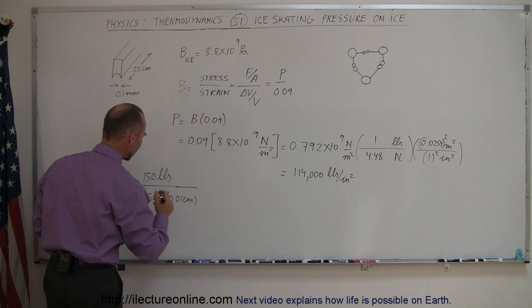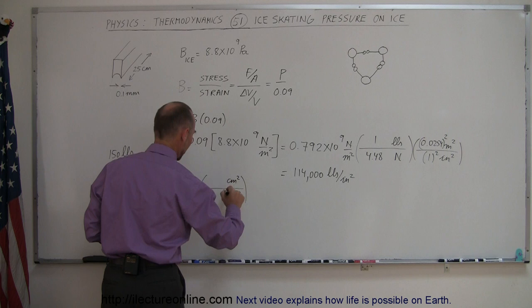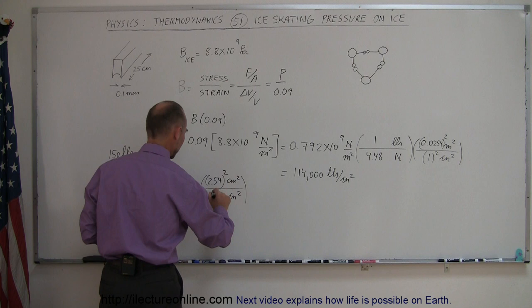That gives centimeters squared, and then we want to convert that to inches. So we have inches squared at the bottom, centimeters squared at the top, and one inch is 2.54 centimeters, so we have to square it out because we're converting square units.